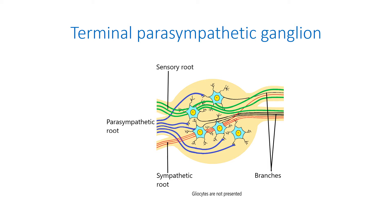Terminal ganglia have three roots and a variable number of branches. The motor root possesses presynaptic parasympathetic nerve fibers, which are myelinated. The sympathetic root carries postsynaptic sympathetic nerve fibers that traverse the ganglion without synapsing. The sensory root carries sensory nerve fibers that also do not relay in the ganglion. The branches carry all three types of nerve fibers. Postganglionic parasympathetic nerve fibers are non-myelinated.